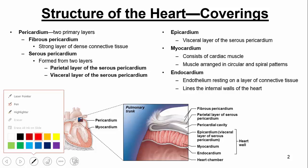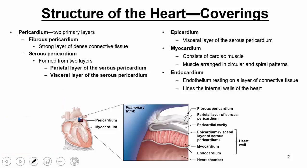Now I'd like to focus on three different layers that compose the heart wall itself. The first is the epicardium, which is the visceral layer of the serous pericardium. Then you have the myocardium, which consists of the cardiac muscle itself — this muscle is arranged in circular spiral patterns, as you'll see in your text. Then finally, the endocardium, which is a layer of connective tissue that lines the inside or internal parts of the walls of the heart.